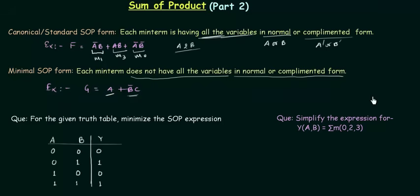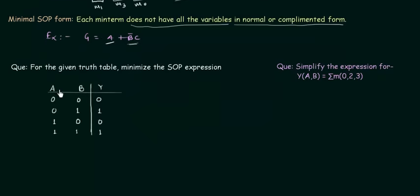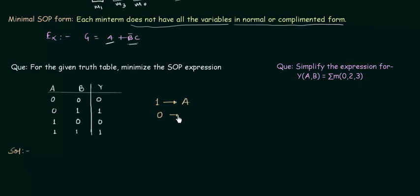Now we will move to example number 1. We have a truth table and we need to minimize the SOP expression for it. In SOP form we write the expression for the output when it is high — when the output is 1. If A is 1 we write it as A, and if A is 0 we write it as A complement. We write the SOP form for the high output only.